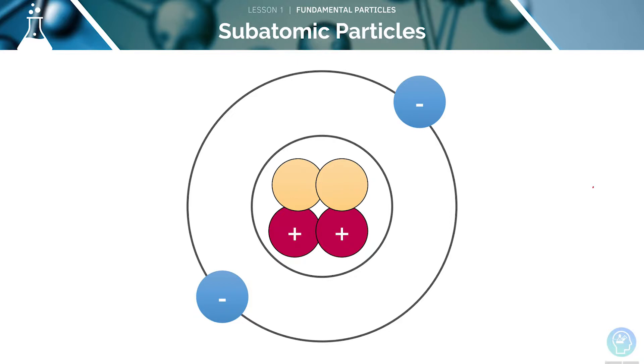The first kind of particle is an electron. The next particle we'll identify is a neutron.